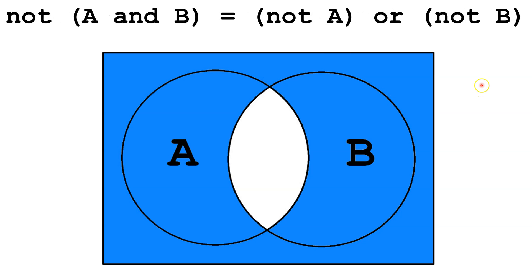Now, let's examine the second law. We have Not A and B. Well, A and B would be this area inside here. So everything but this area inside here would be Not A and B.